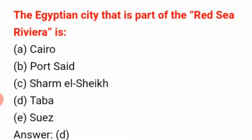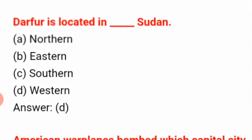The Egyptian city that is part of the Red Sea Riviera is D: Taba. Darfur is located in Sudan.